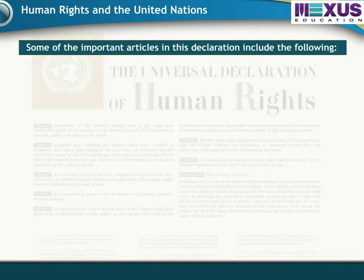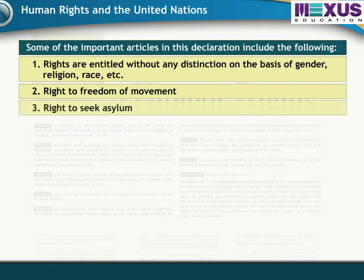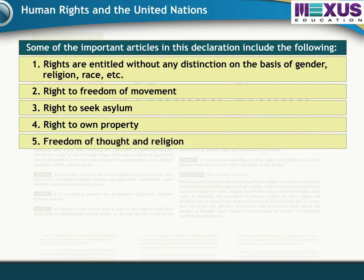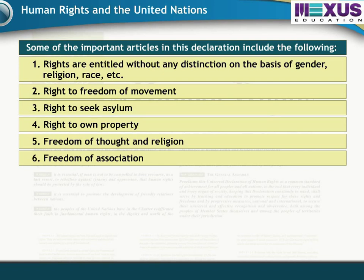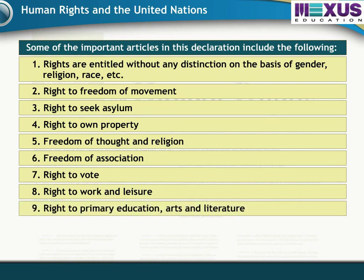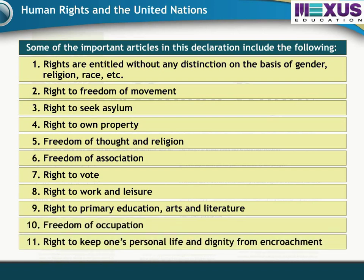Some of the important articles in this declaration include the following: entitlement of rights without any distinction on the basis of gender, religion, race, etc.; right to freedom of movement; right to seek asylum; right to own property; freedom of thought and religion; freedom of association; right to vote; right to work and leisure; right to primary education, arts and literature; freedom of occupation; and the right to keep one's personal life and dignity from encroachment.